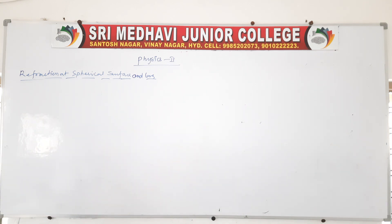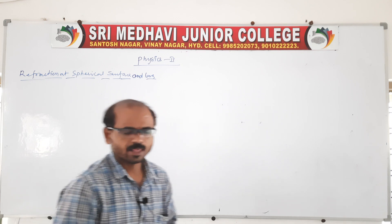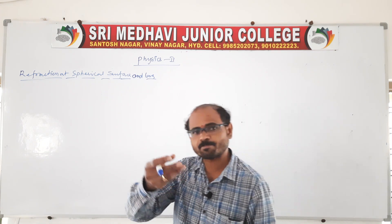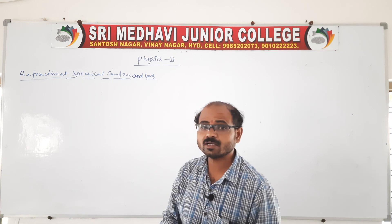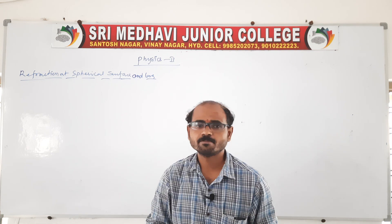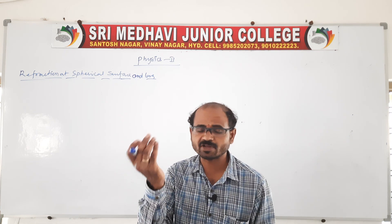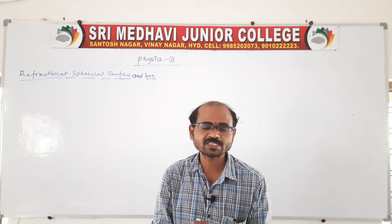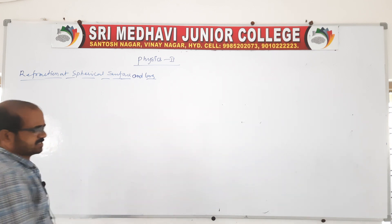A spherical surface is nothing but a part of a sphere. When a refracting material forms part of a sphere, it is called a spherical refracting surface. The light is refracted from this part, so we call it refraction at a spherical surface.